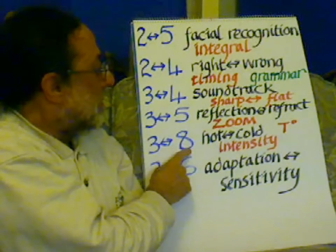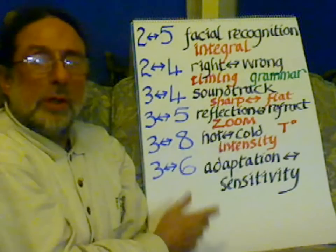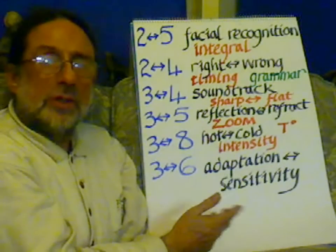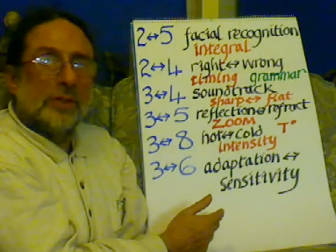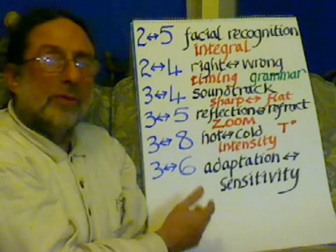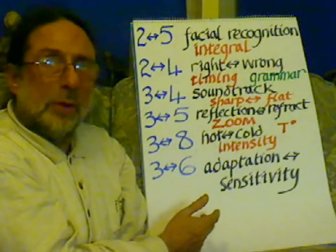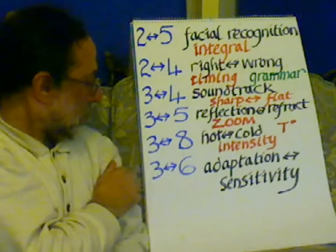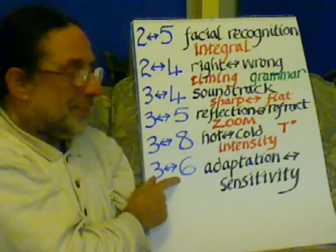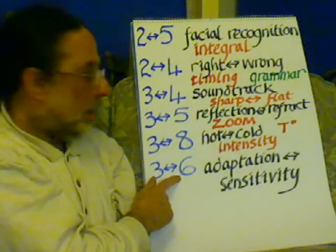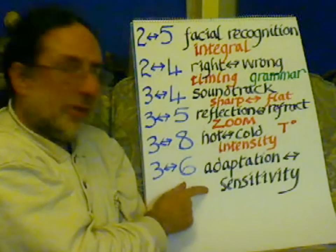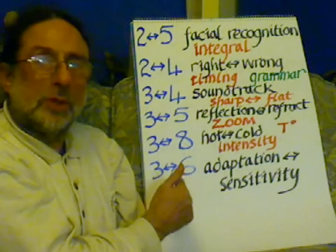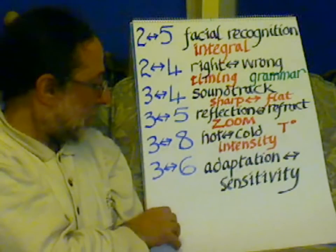From 3 to 8 is auto-cold — the temperature, but not just the temperature: the actual intensity. In this relativity triangle, if we play music, the intensity of the music can vary, and that variation in intensity is on that function. From 3 to 6 — space to pressure — is adaptation or sensitivity. We adapt to a situation, the pressure in a situation, and then we become sensitive to changes in that situation.